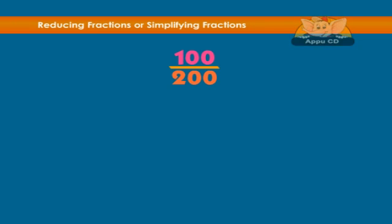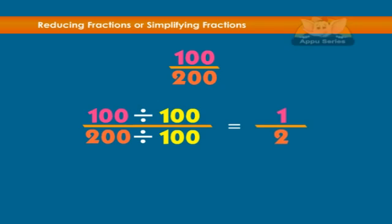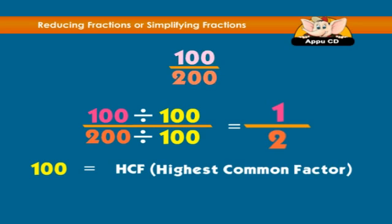Let's see. 100 divided by 100, and 200 divided by 100, equals 1 over 2. Cool, isn't it? Just divide the numerator and the denominator by the highest common factor.